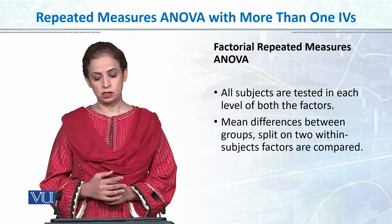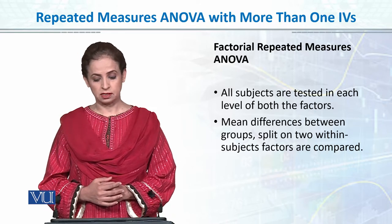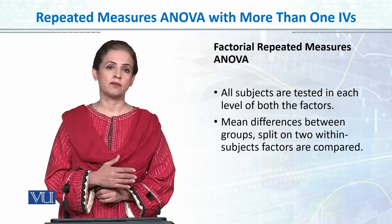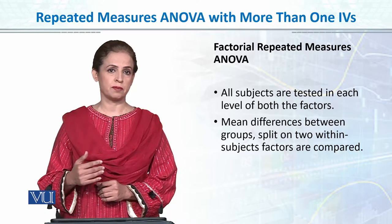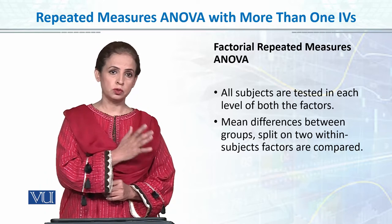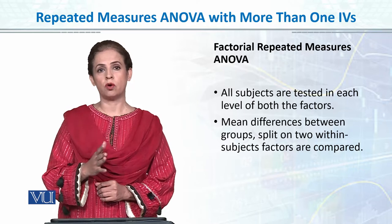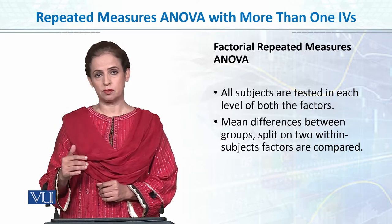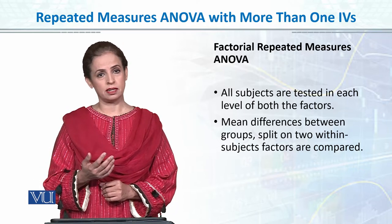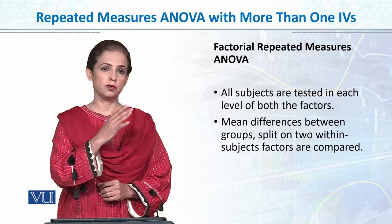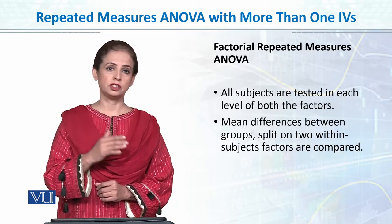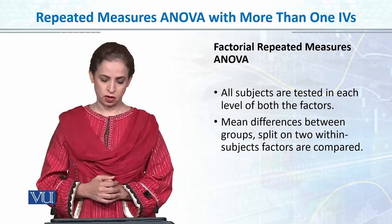All subjects are tested in each level of both factors. Just as we did in one-way repeated measures ANOVA where the same subjects are used across all levels of the independent variable, similarly in two-way ANOVA we will be using the same participants across each level of each independent variable.